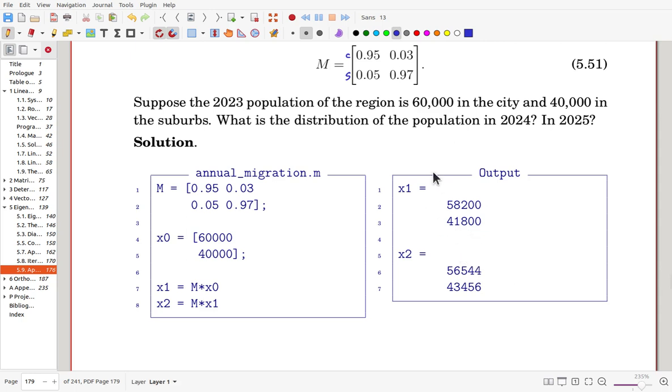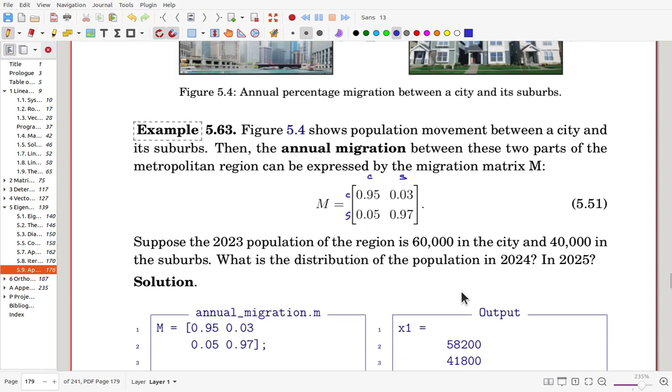So, in this problem, we assume that there is no migration from the outside in city and suburb, so that it can happen.